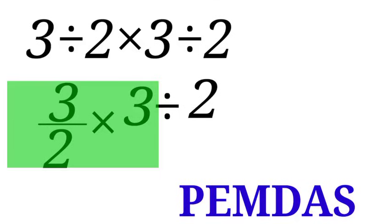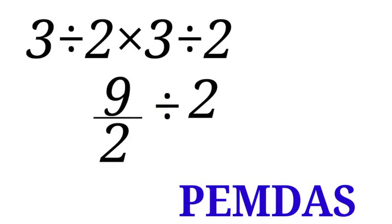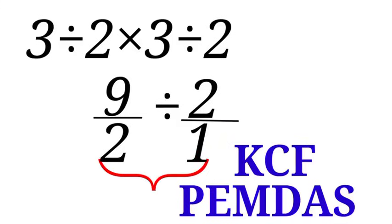So we have another expression now: 9 over 2 divided by 2. Now let me introduce 1 under the 2 so that we can have both numerator and denominator to avoid confusion. Here we have 9 over 2 divided by 2 over 1. I am going to apply KCF. K is for keep, C is for change, and F is for flip.